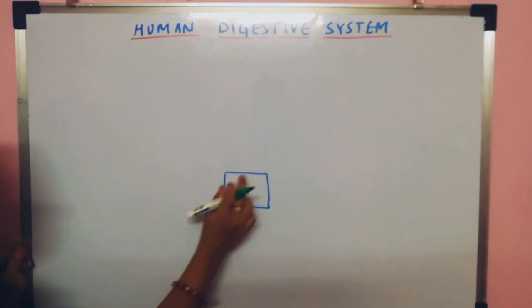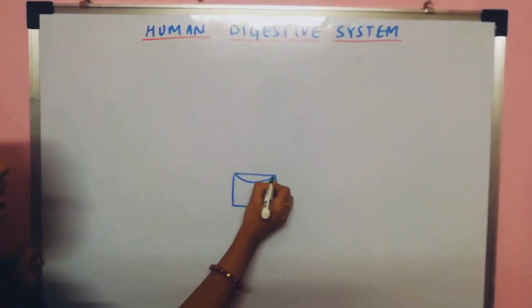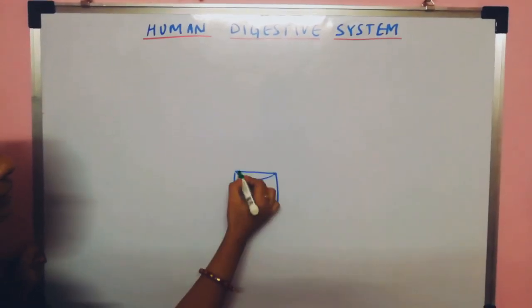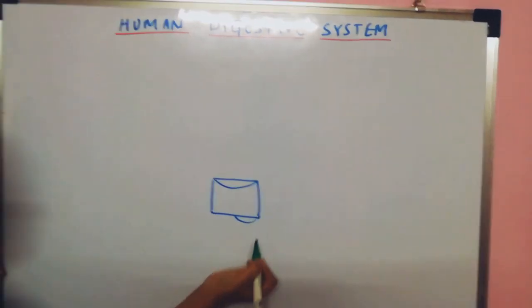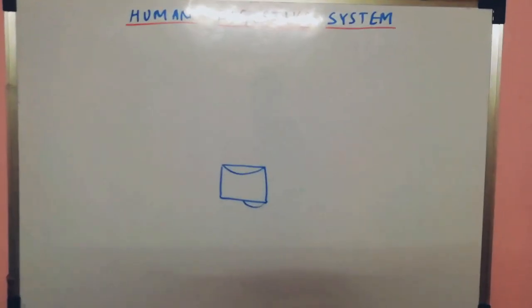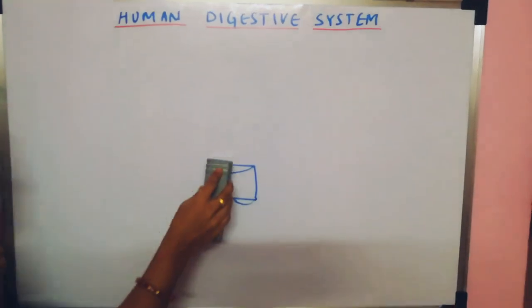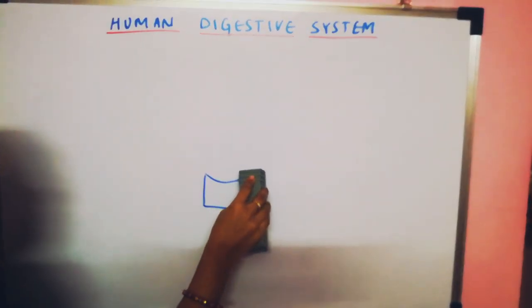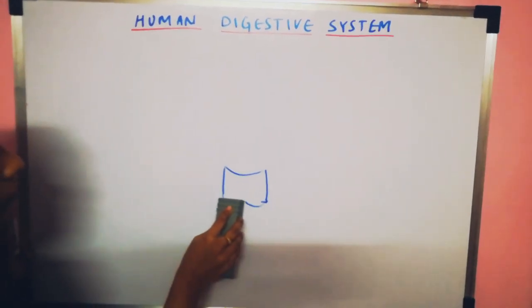The first thing you have to do is make a square. Once a square is being made, then make curves. Here full curve and from this part half curve. Then you have to erase the upper part line, upper side of the square and the lower side of the square.